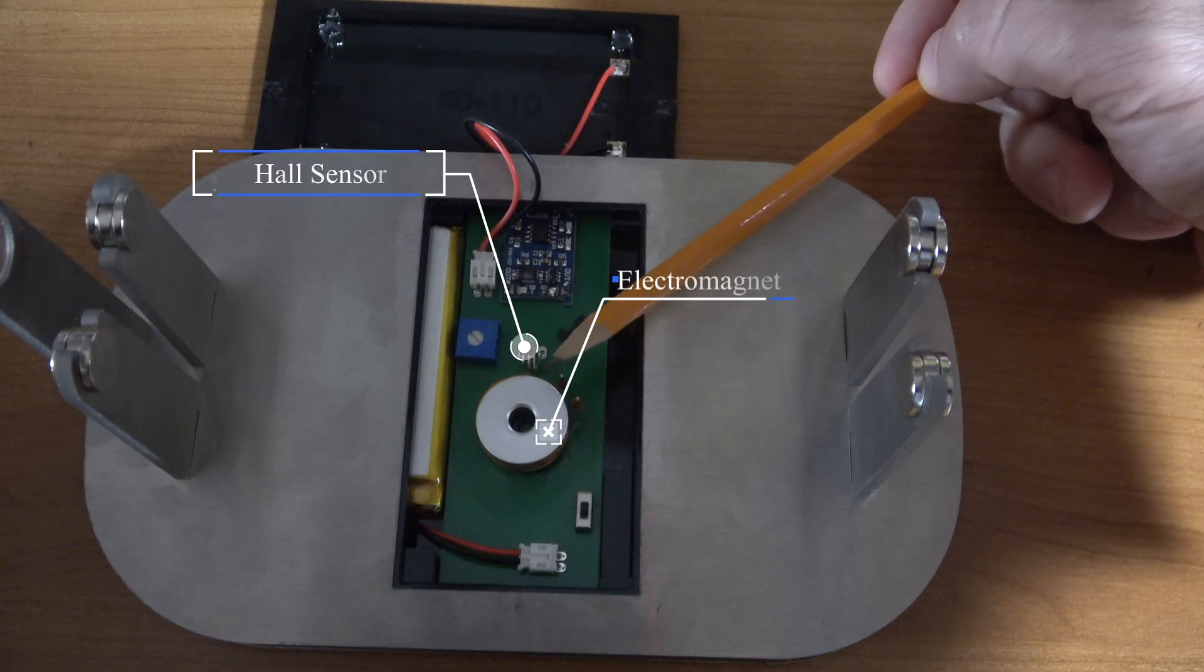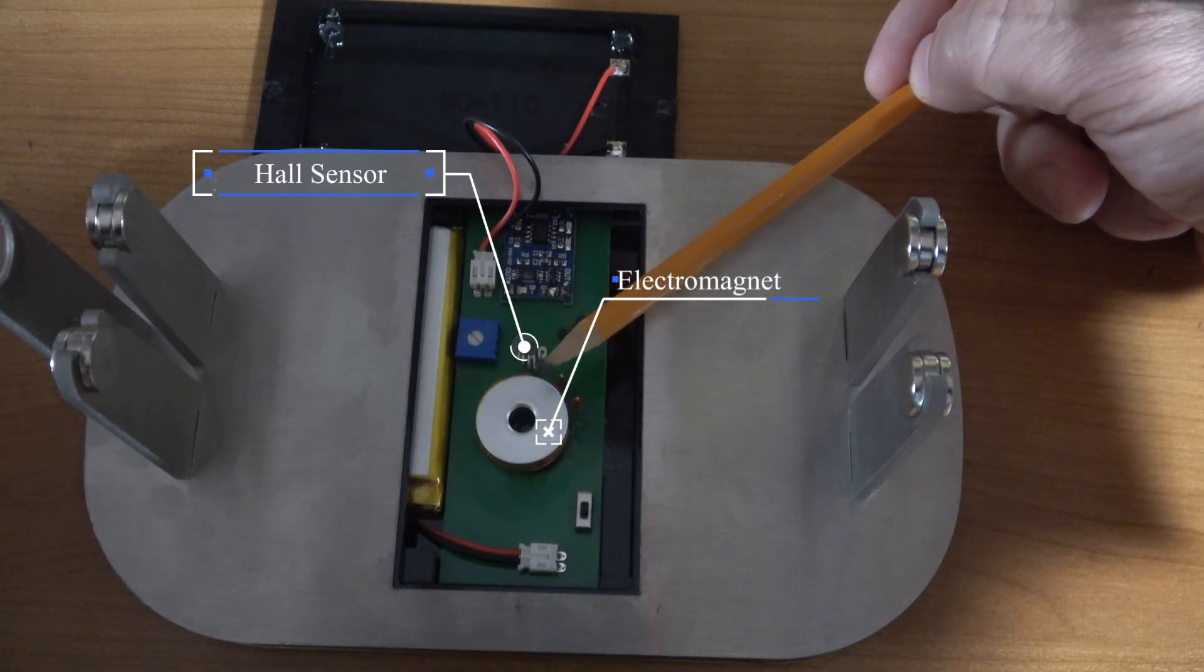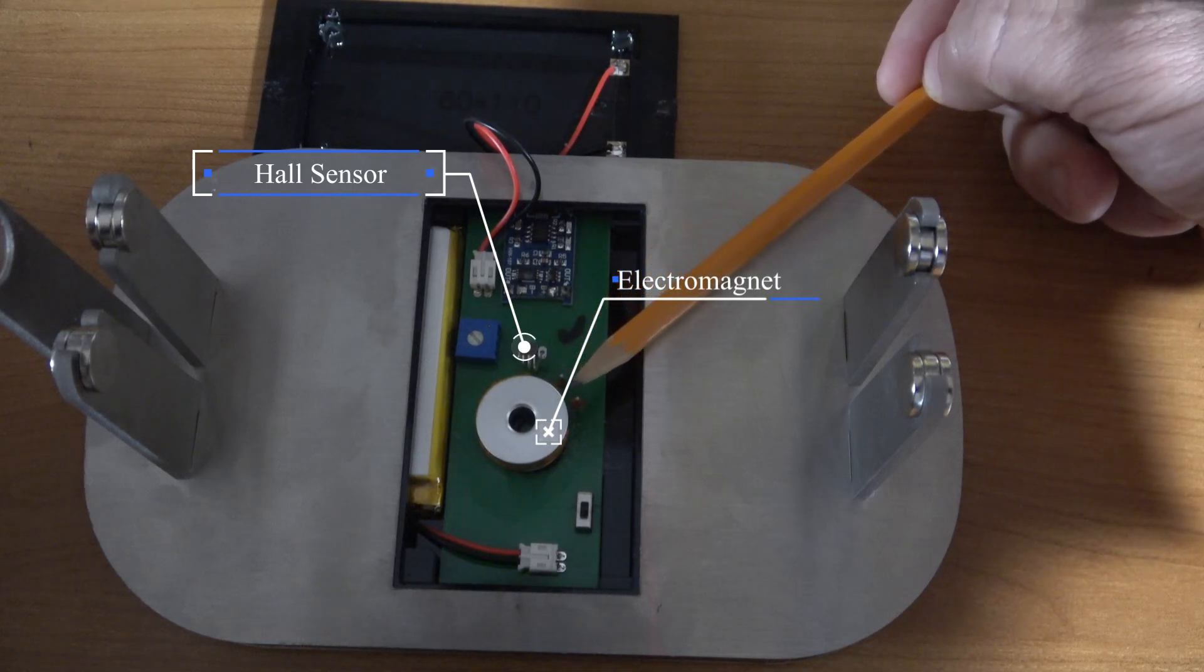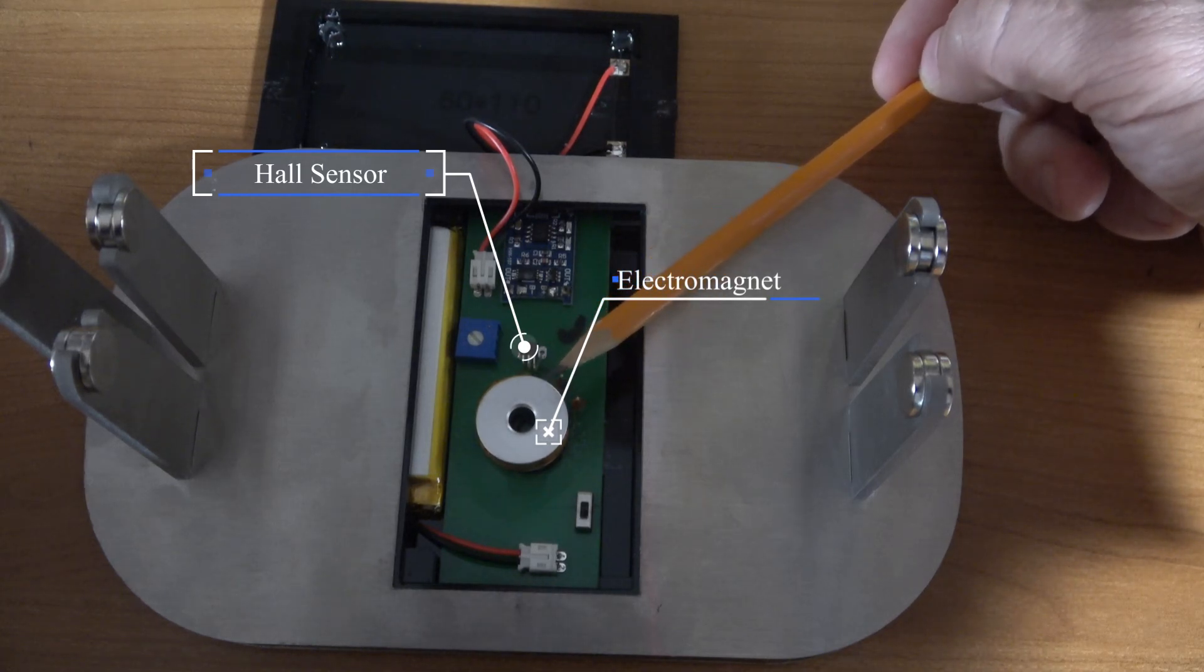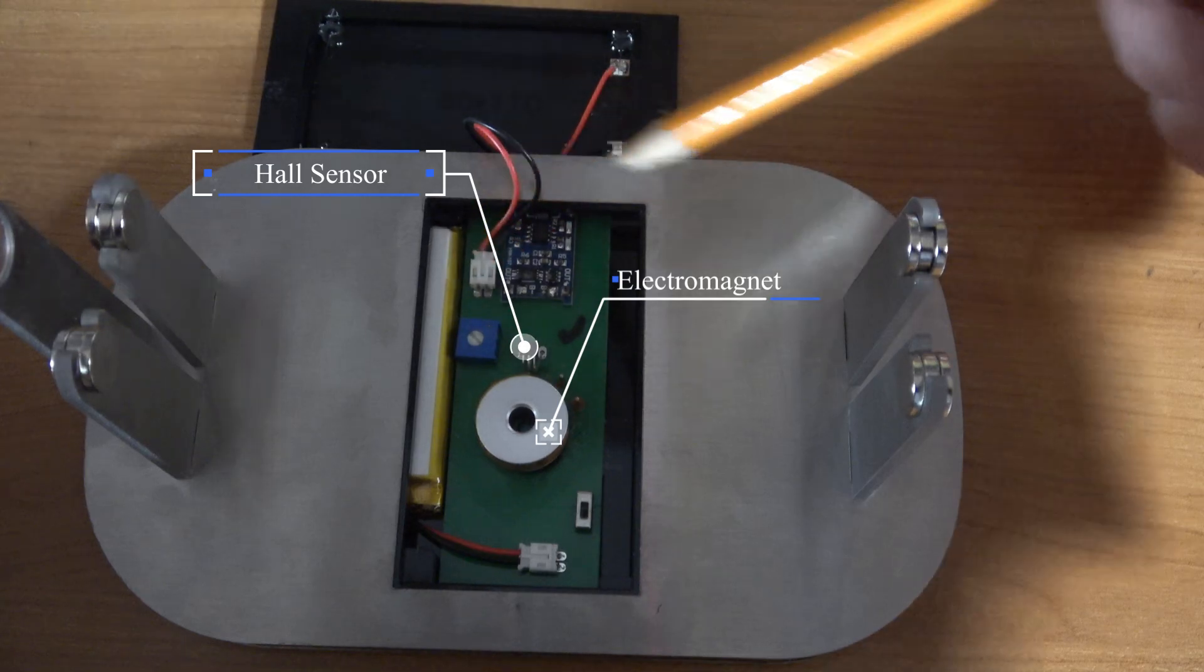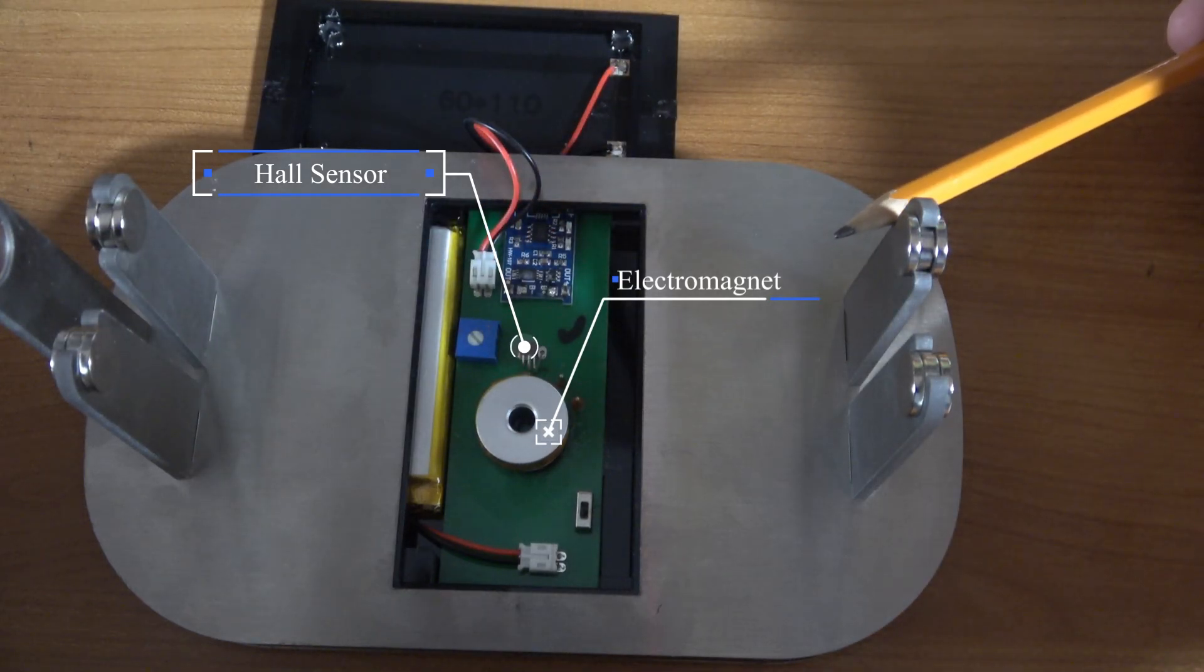Basically how the hall sensor works is that when a magnet comes close to it, it's triggered by the magnetic field, so it will turn on whatever device it's hooked to, and in this case it's the electromagnet.